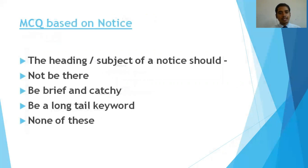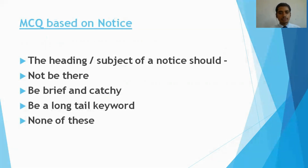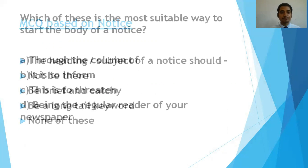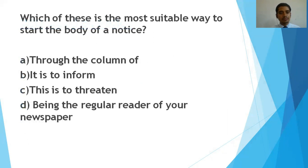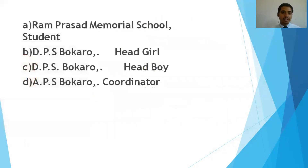Next is the notice writing format, which consists of a title, body, date, time, and the authorized signature of the authority. A sample MCQ question: 'The heading of this notice should be' — the correct option is 'brief and catchy.' Another question: 'Which of these is the most suitable way to start the body of the notice?' — and you choose from the given options. You might also get the entire notice with blanks and you will have to fill in those blanks by choosing the correct options.